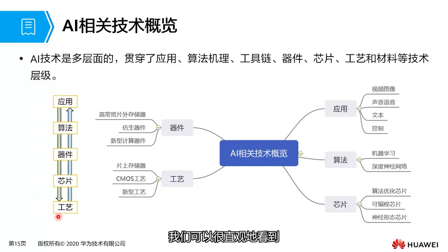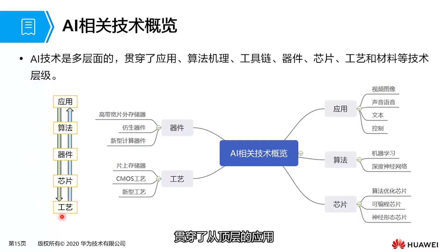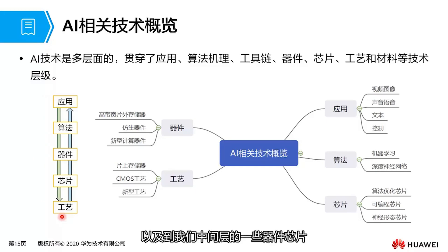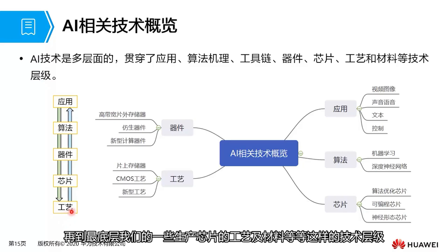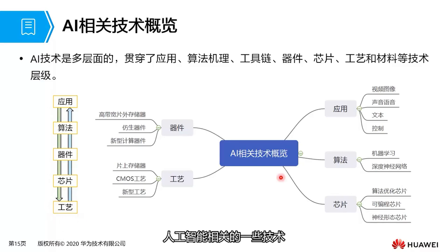Through this diagram on the left, we can intuitively see that the technology of artificial intelligence spans multiple levels, ranging from the top-level applications and algorithm mechanisms, to some devices and chips in the middle layer, and then down to the bottom layer of chip production processes, materials, and other technological levels.